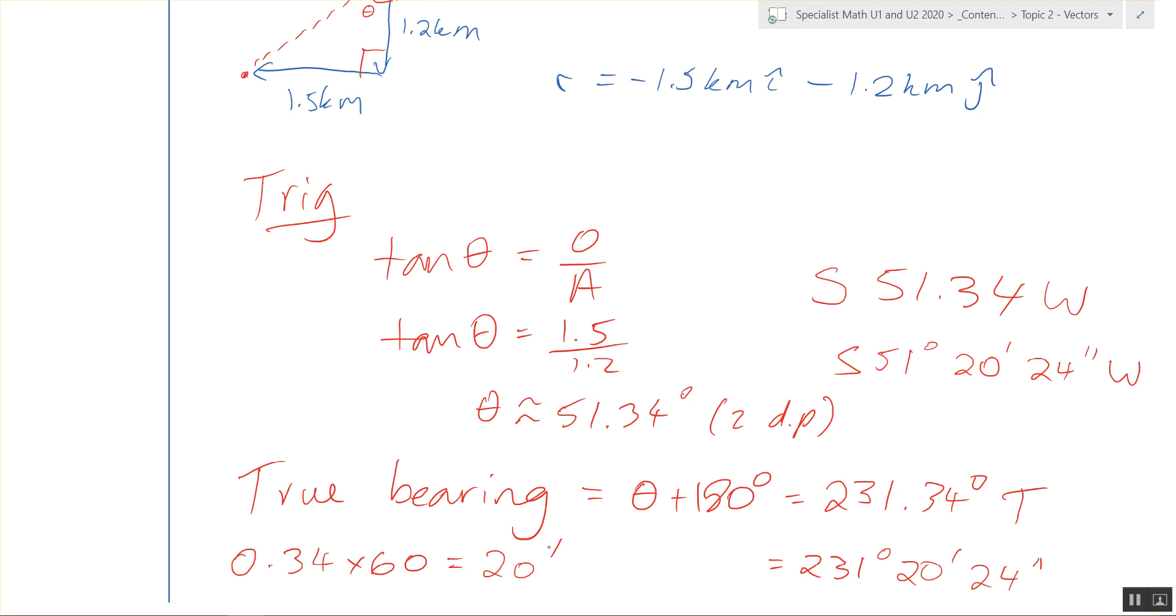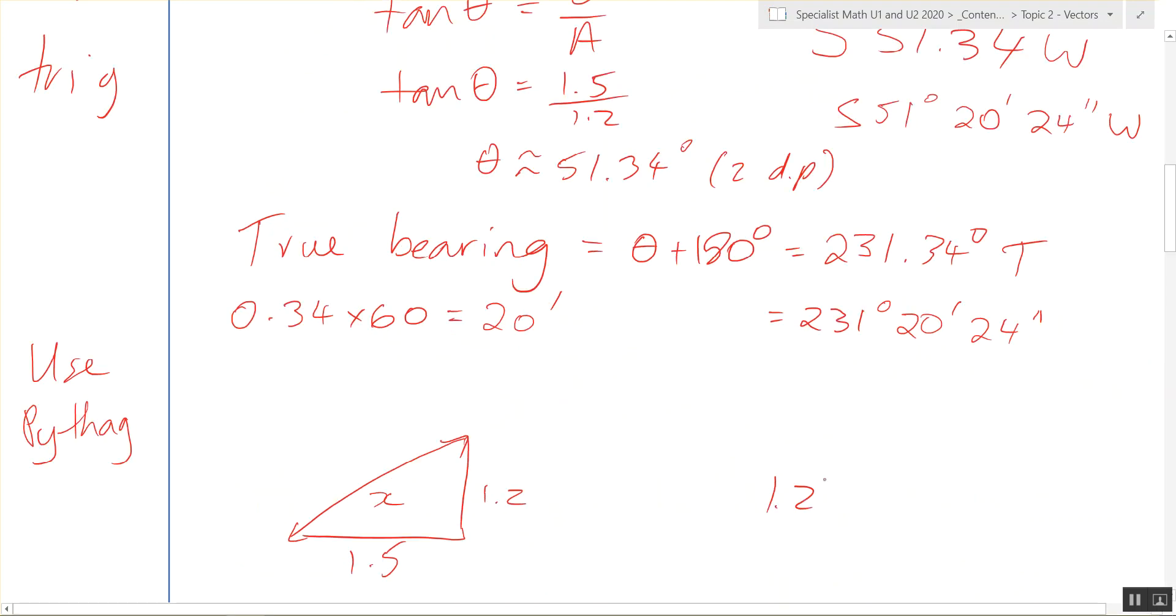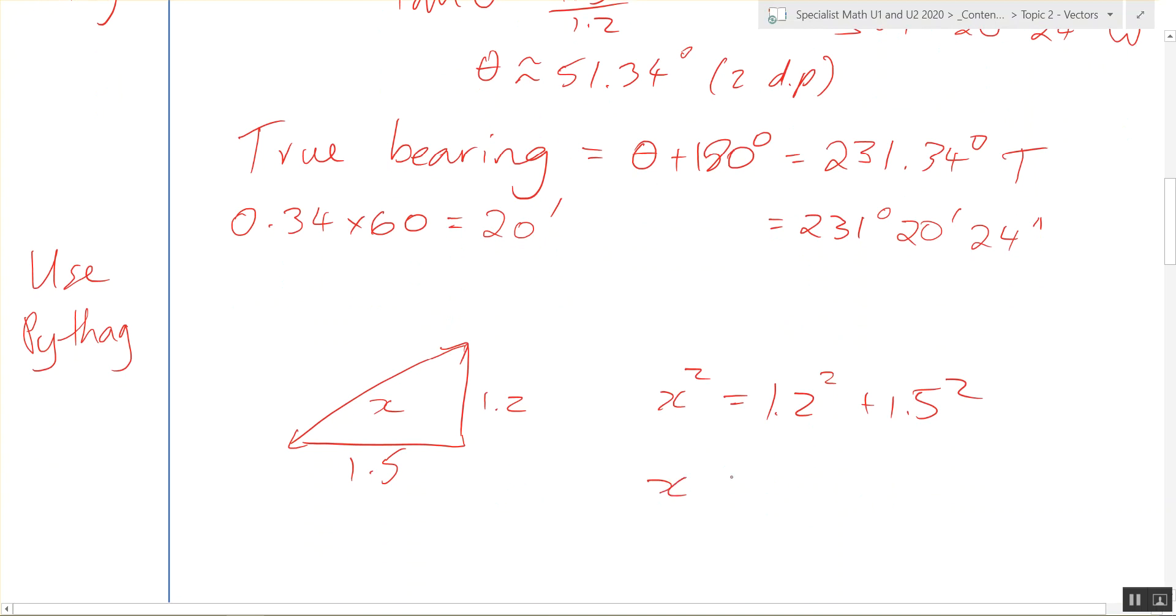You go the other way. Divide by 60. Use Pythagorean theorem: 1.2 squared plus 1.5 squared gives us 1.9209 here. So we found my displacement from my origin.